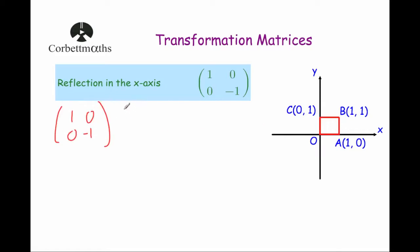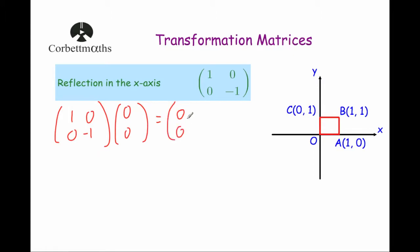Let's start off with the origin, the point 0, 0. If we multiply it, we're going to multiply the first row by the column: 1 times 0 is 0, 0 times 0 is 0, adding them together is 0. And then the second row by the column: 0 times 0 is 0, minus 1 times 0 is 0, adding them together is 0. So the point of the origin will stay where it is.